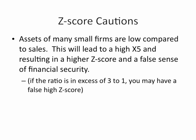Finally, with the Z-score, if you have a small company that doesn't have a lot in the way of assets, or your assets are small in relation to sales, this will lead to a really high X5 variable, which can give a very high Z-score and provide a false sense of security. What you want to do is limit this to monitoring within your firm year-to-year, quarter-to-quarter, but also comparing to businesses that are similar to you in your industry and similar in size.